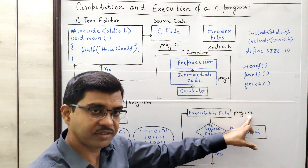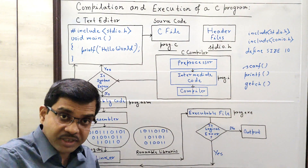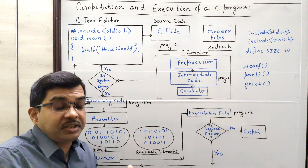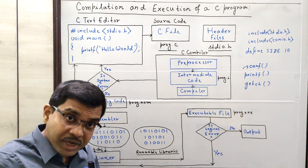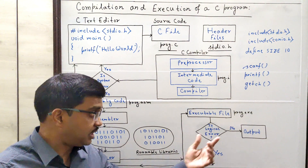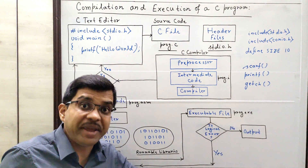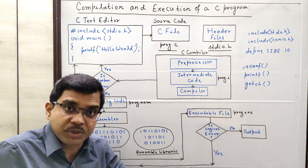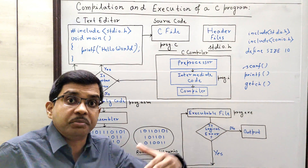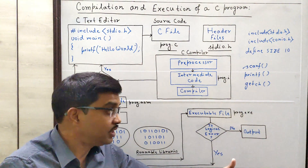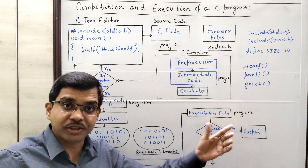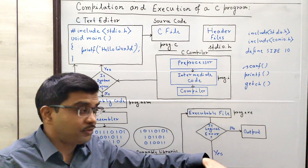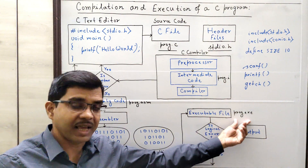Now, after getting the .exe file, who will execute this program? The CPU — the central processing unit. Whenever you write a C program, you save it in your hard disk, and the hard disk is secondary memory. So now we have to transfer this .exe file from the hard disk to the main memory. Main memory means RAM. The .exe file — the executable file — has to be transferred from secondary memory to main memory, which is RAM. Who will transfer this? The loader. So the loader will load this executable file from the hard disk to the main memory, so that the CPU can find this file and execute it.